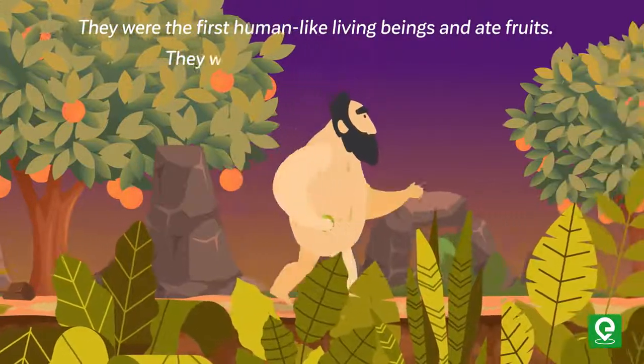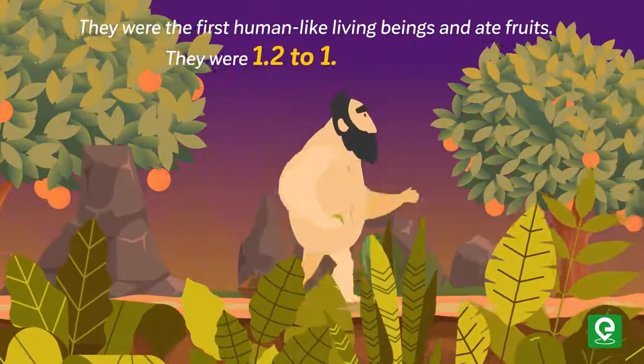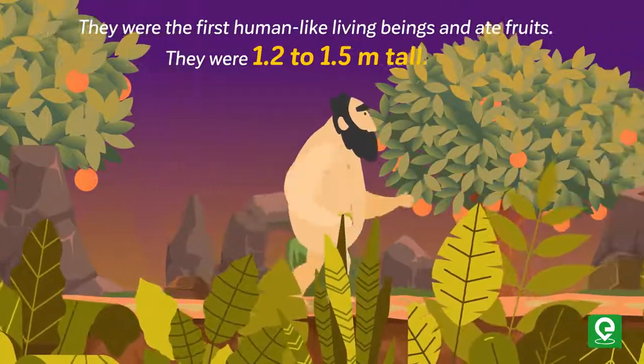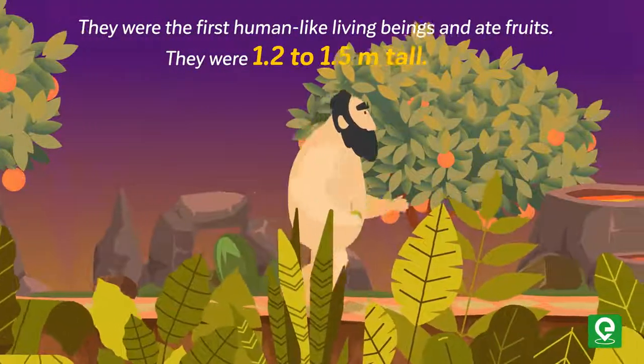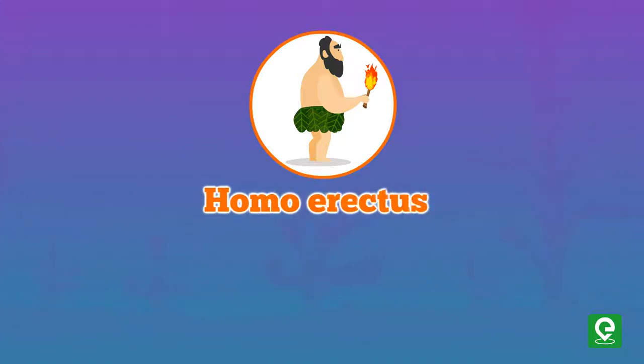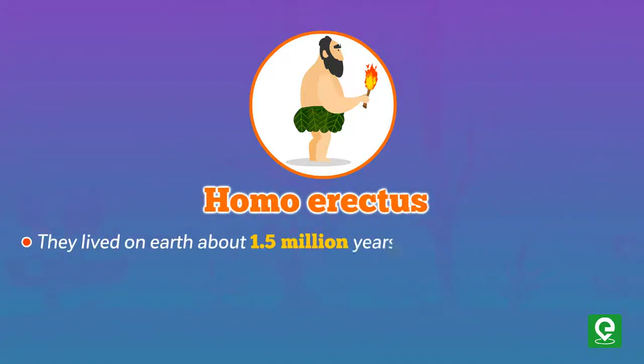Homo habilis had a cranial capacity of 650 to 800 CC. They were the first human-like living beings and ate fruits. They were 1.2 to 1.5 meters tall.